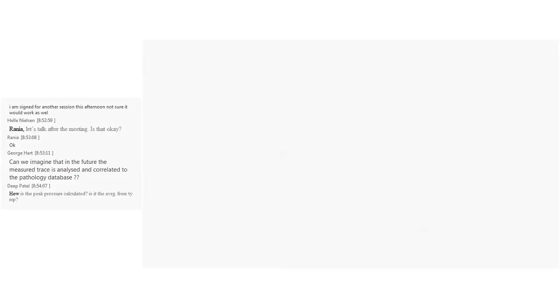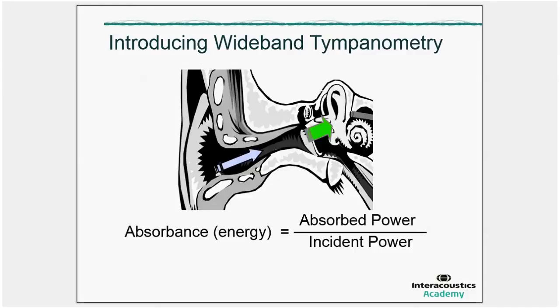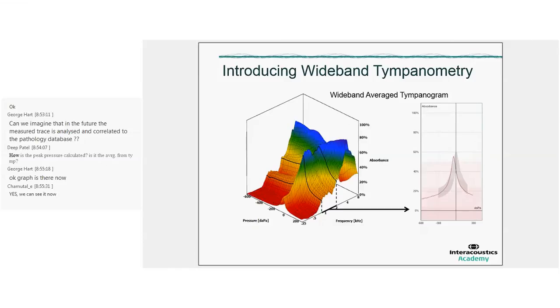I see that Deepa has a question. How is the peak pressure calculated? That is a very good question. If you think about how the wideband average tympanogram is calculated, it is the average of all those tympanograms. It results in a single line and the peak pressure is simply the peak of this graph.